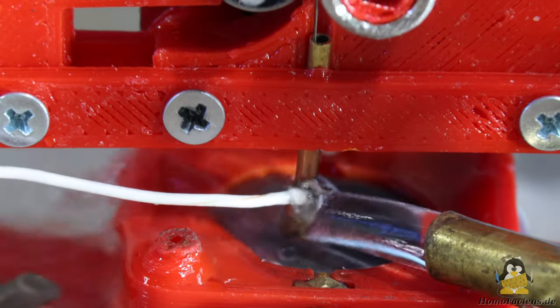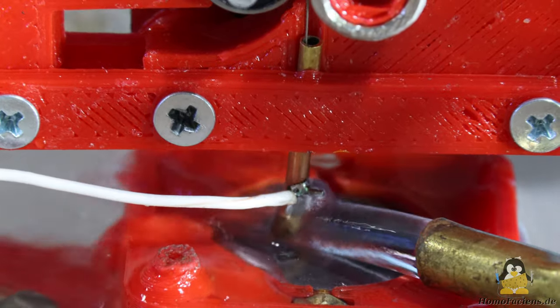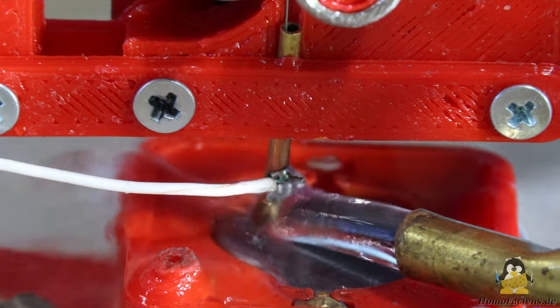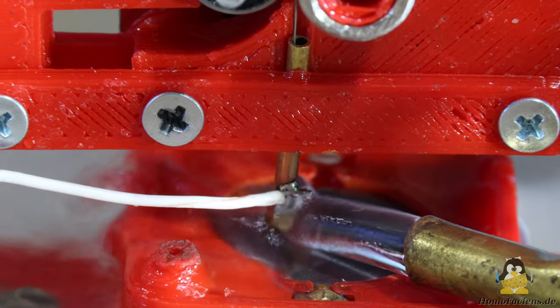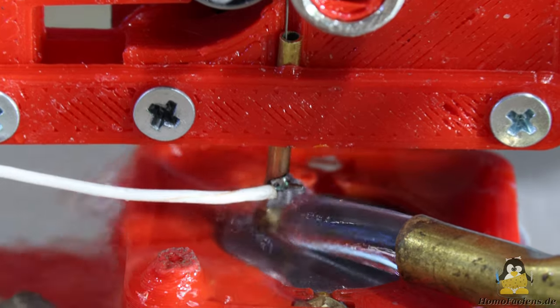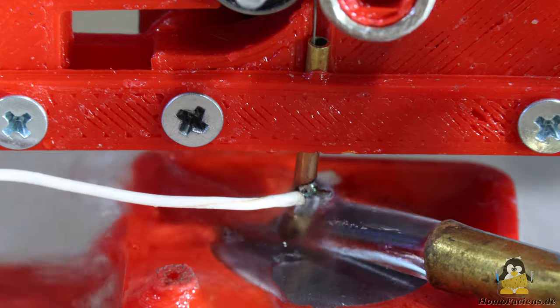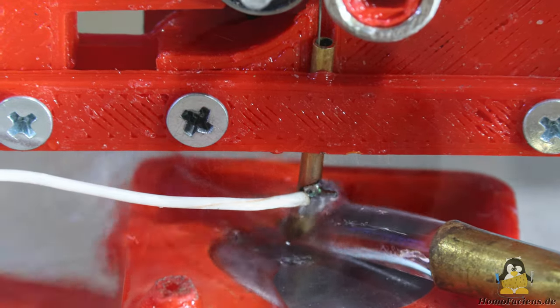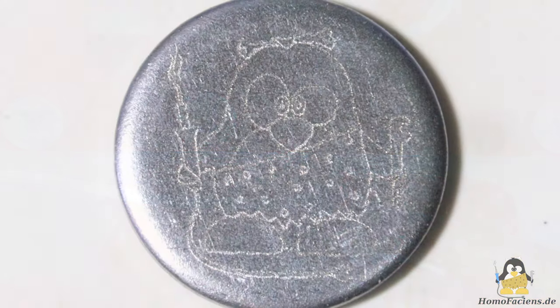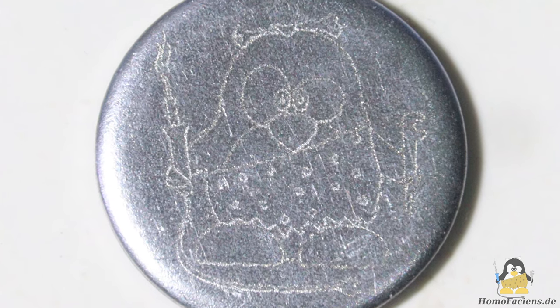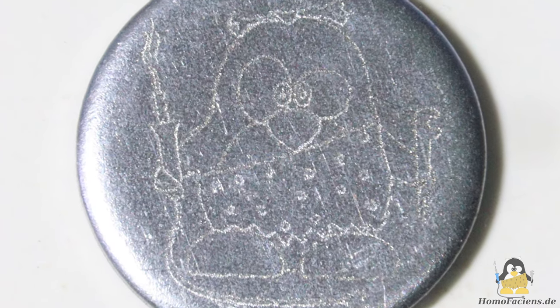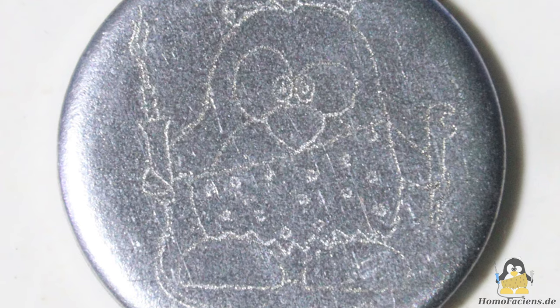The next engraving is done with a voltage of 5V. The sparks under the water jet are slightly stronger than before. The lines of the finished engraving are a little deeper, so the graphic can be seen a little more clearly.